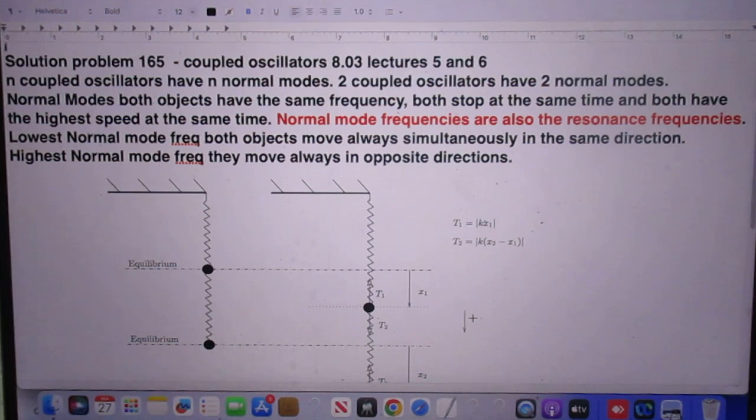If you have N as in Nancy coupled oscillators, they have N as in Nancy normal modes. In our case here we have two coupled oscillators, so we have two normal modes.